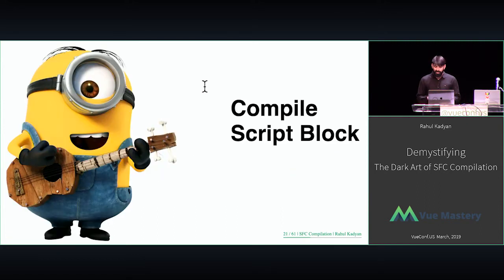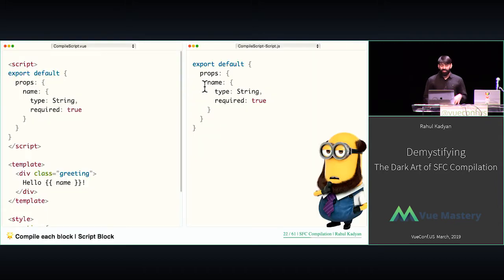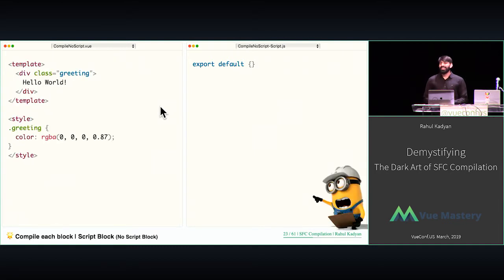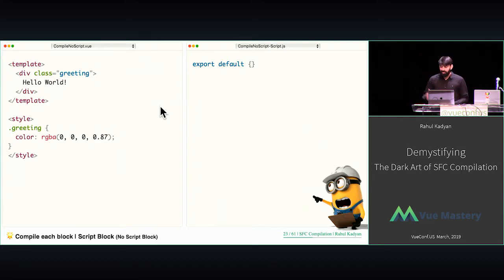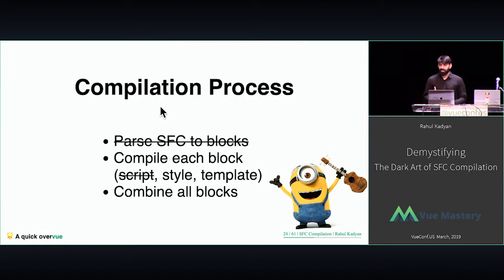Let's start compiling the script. Script compilation is more straightforward. You see a block of script, you take the script and put it in a JavaScript file — script compilation done. If there's no script in that component, we just export an empty object. Script compilation done.